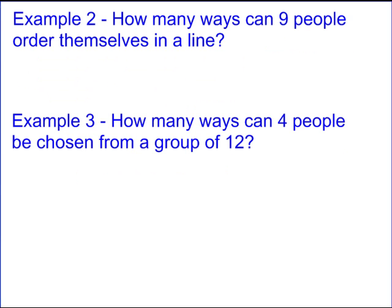Example 2, how many ways can 9 people order themselves in a line? Well, this is like I talked about the one with 6 people. There are 9 ways to do the first, 8 to do the second, and since it's all 9 people, it goes all the way down to 1, which is just 9 permute 9. And you multiply that out, and you get 362,880. So there's that many different lines that can be formed from a group of 9.